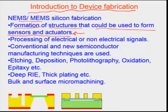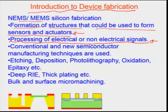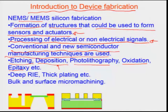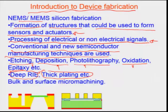When we talk about MEMS, we mean processing of electrical or non-electrical signals — for example, mass-based or thermal means not driven by electron flow. For silicon fabrication, we generally use conventional and new semiconductor manufacturing techniques — some of them being etching, deposition, photolithography, oxidation, and epitaxy. There are also MEMS-specific techniques such as deep reactive ion etching, used for developing high aspect ratio structures on silicon surface, and thick plating — electroplating of metals several microns in thickness — used for fabricating MEMS structures.